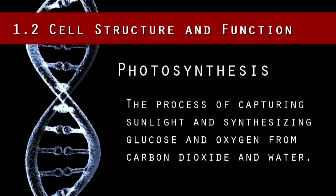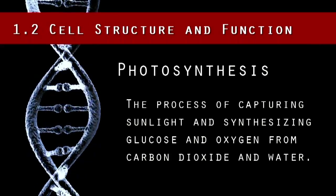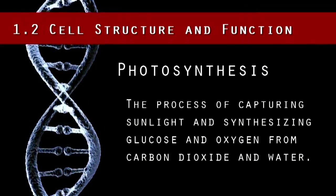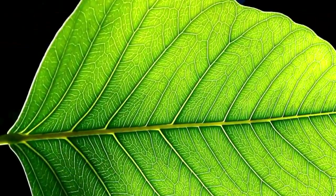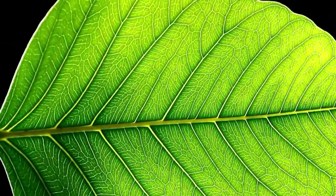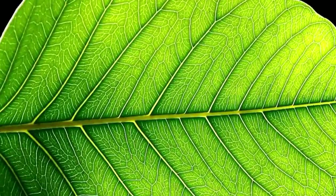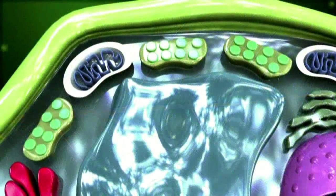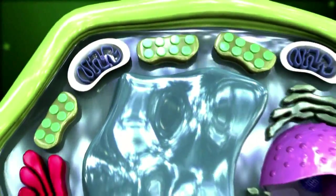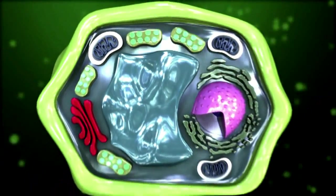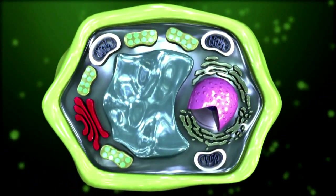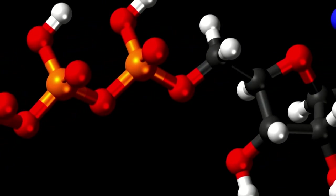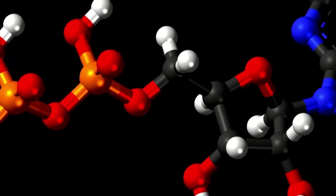Photosynthesis is one of the most important biochemical pathways since nearly all life on Earth depends on photosynthesis as a source of energy. Animals metabolize the glucose from a plant source to produce ATP, the energy currency of the cell.